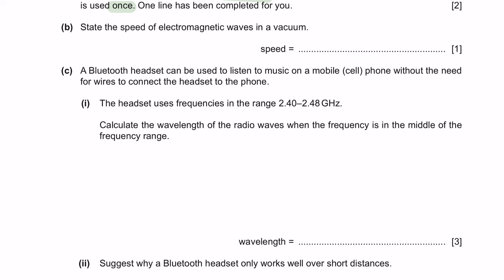Question B. State the speed of the electromagnetic wave in a vacuum. The speed of electromagnetic wave is similar to the speed of light, which is 3.0 times 10 to the power of 8 meters per second. Question C. A Bluetooth headset can be used to listen to music on a mobile cell phone without the need for wires to connect the headset to the phone. Part 1. The headset uses frequencies in the range of 2.4 to 2.48 GHz. Calculate the wavelength of the radio waves when the frequency is in the middle of the frequency range.